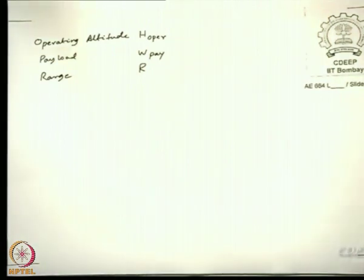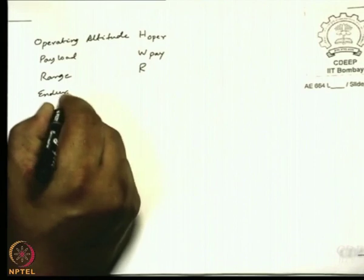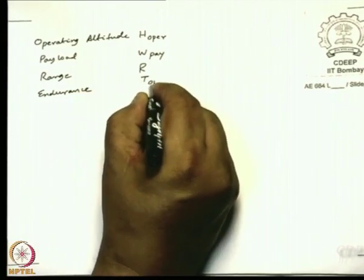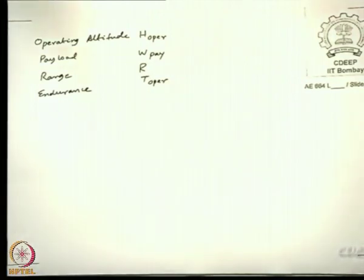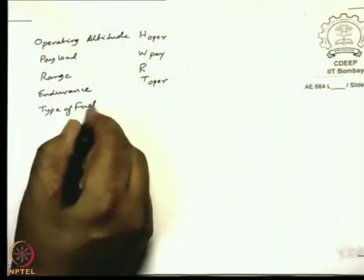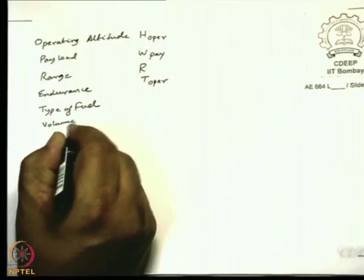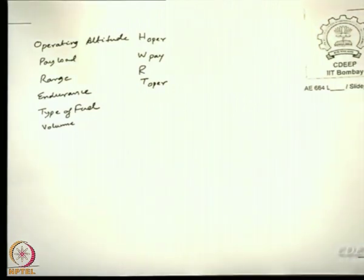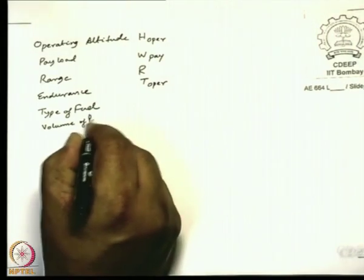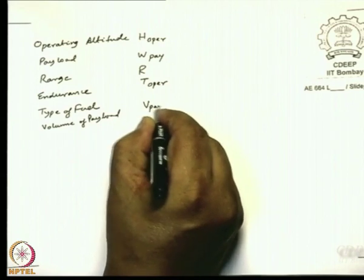Then type of fuel — very good. Then volume of payload to be carried — let us not assume it is only going to go in the gondola, so we say volume of payload. Then speed — there are many speeds: cruise speed, max speed, minimum speed. We are talking about cruise speed.